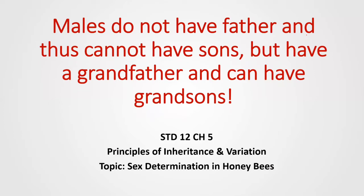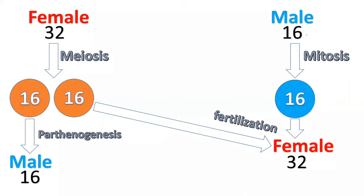We are going to discuss chapter number five of standard 12, principles of inheritance and variation. The topic of discussion is sex determination in honey bees. Honey bees have a method of sex determination which we call the haploid-diploid method.